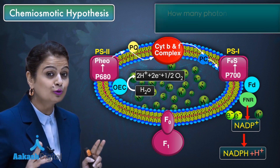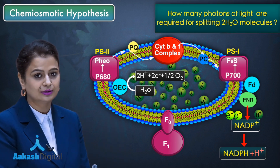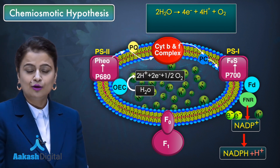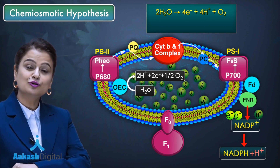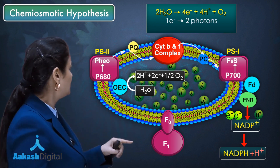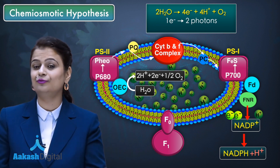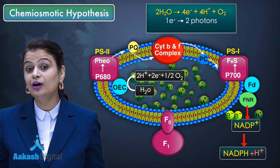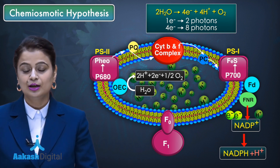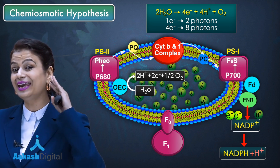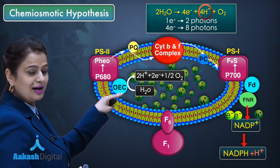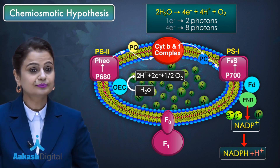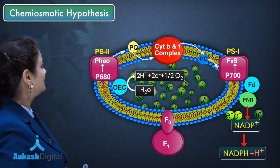For splitting two water molecules, four electrons need to be transported through the ETS. For transport of one electron, two photons are required — one for activation of photosystem 2 and one for activation of photosystem 1. So for transport of four electrons, eight photons are required. Therefore, the breakdown of two water molecules requires eight photons, releasing four hydrogen ions and one oxygen molecule into the thylakoid lumen.